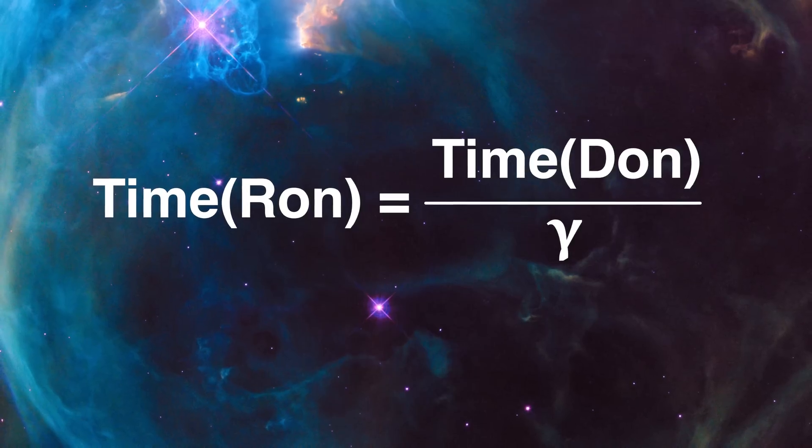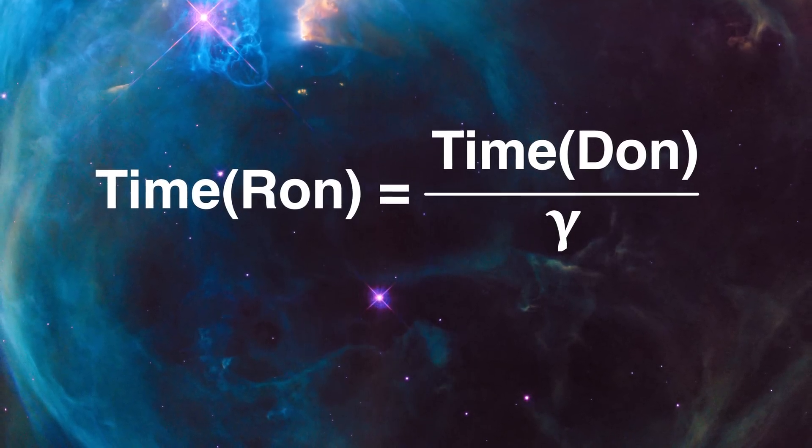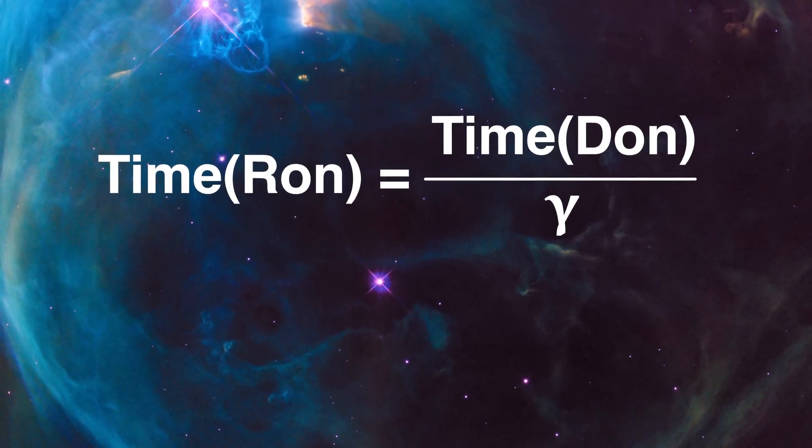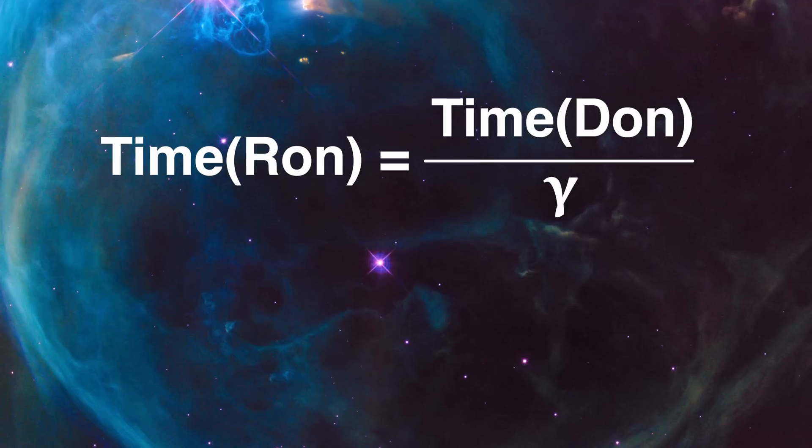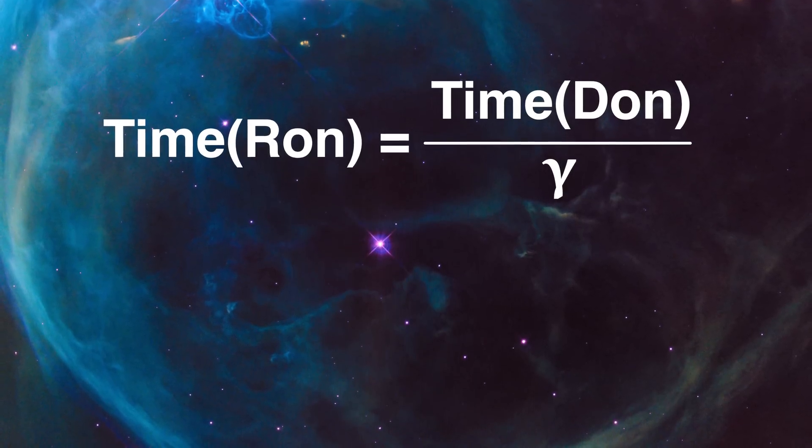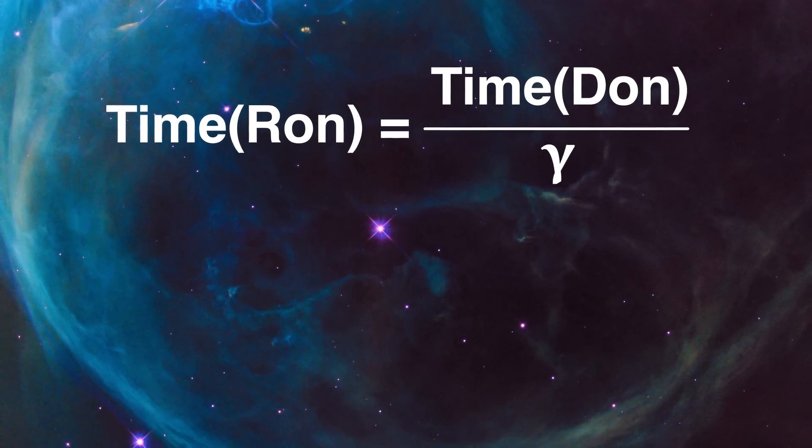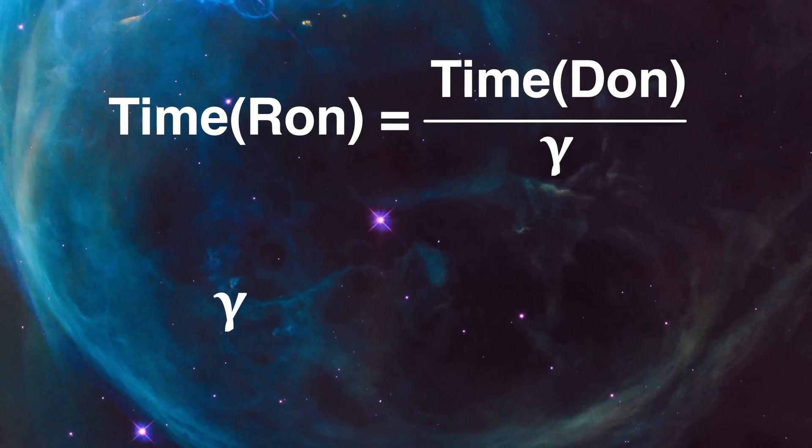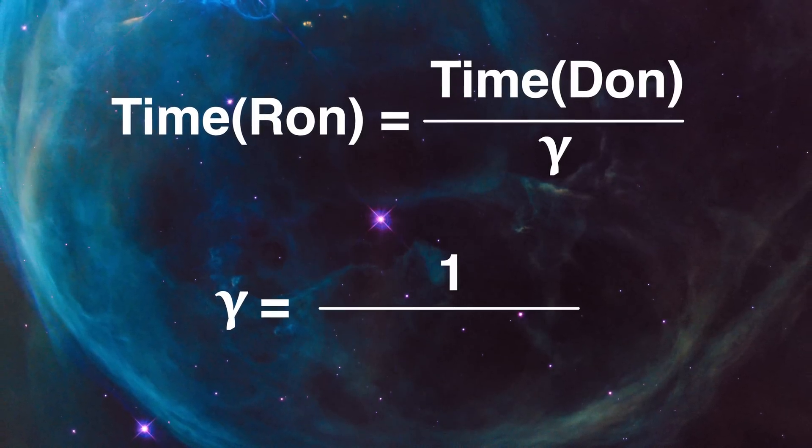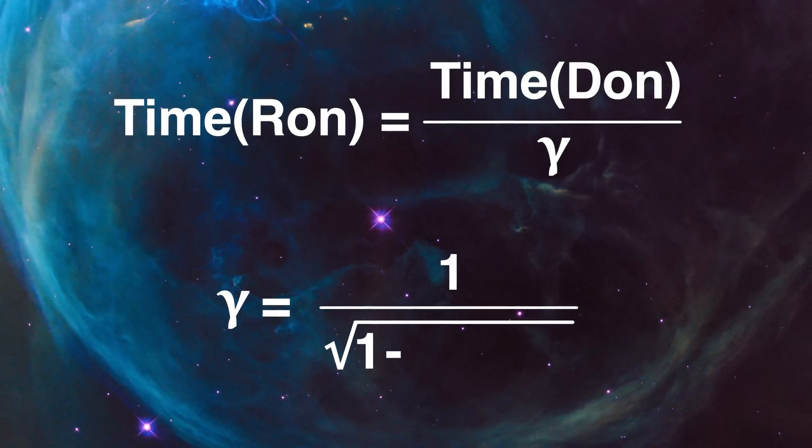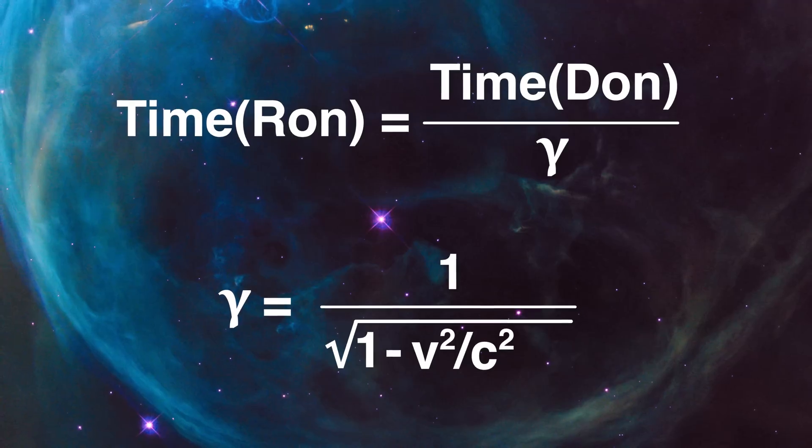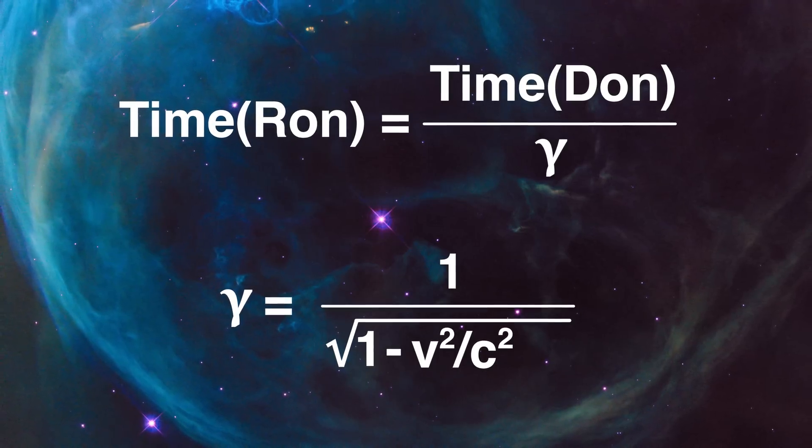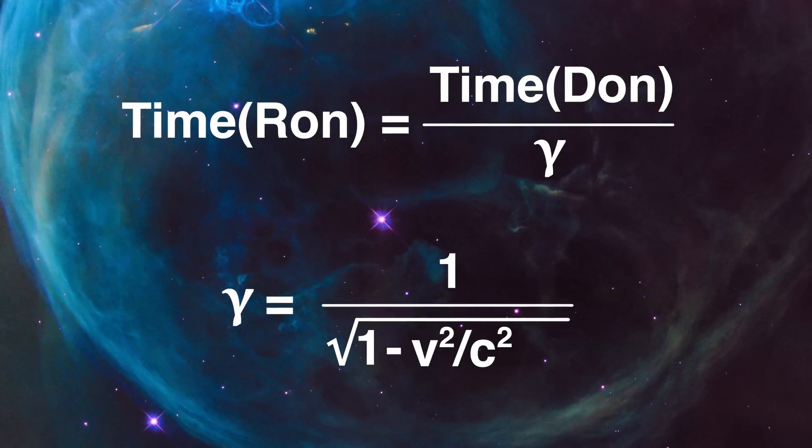But Ron is traveling at high speed, so his clocks run slower. For every time t Don experiences, Ron experiences a duration of t over gamma. And gamma is just equal to one over the square root of one minus v squared over c squared. C is, of course, the speed of light. And I showed where this comes from in the Lorentz Gamma video.